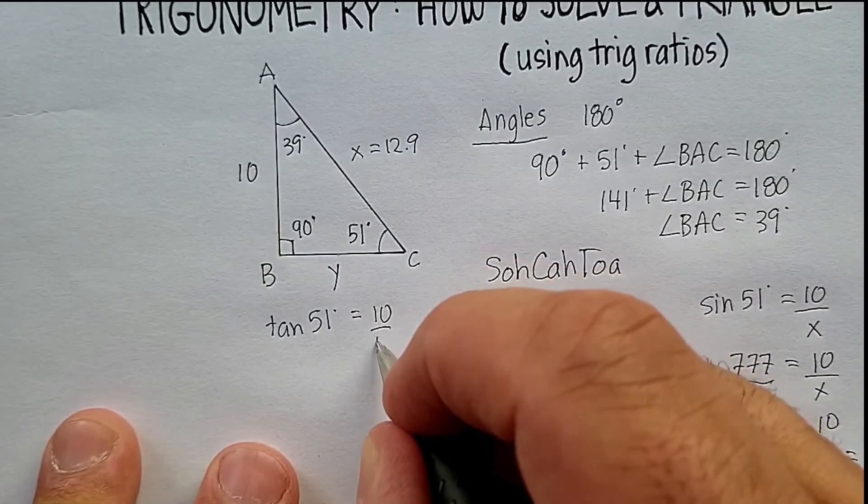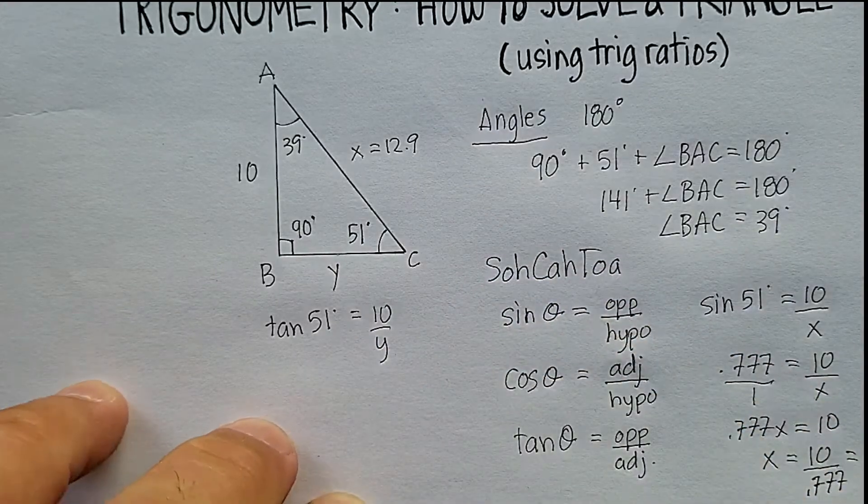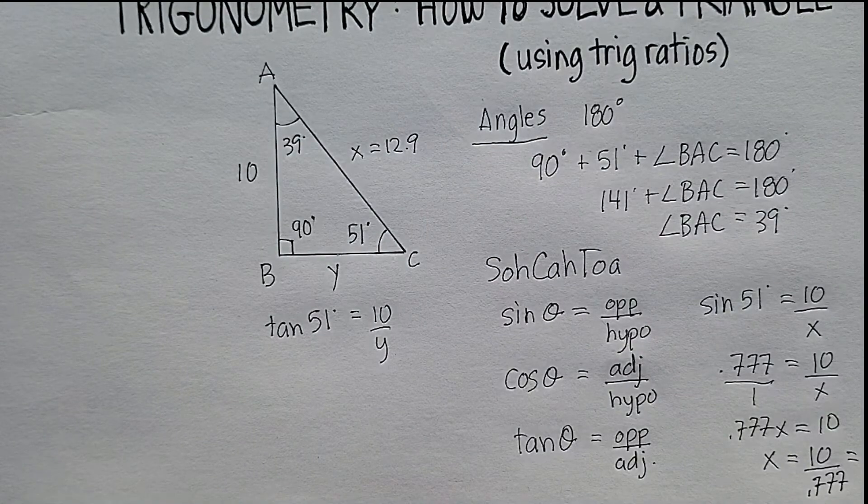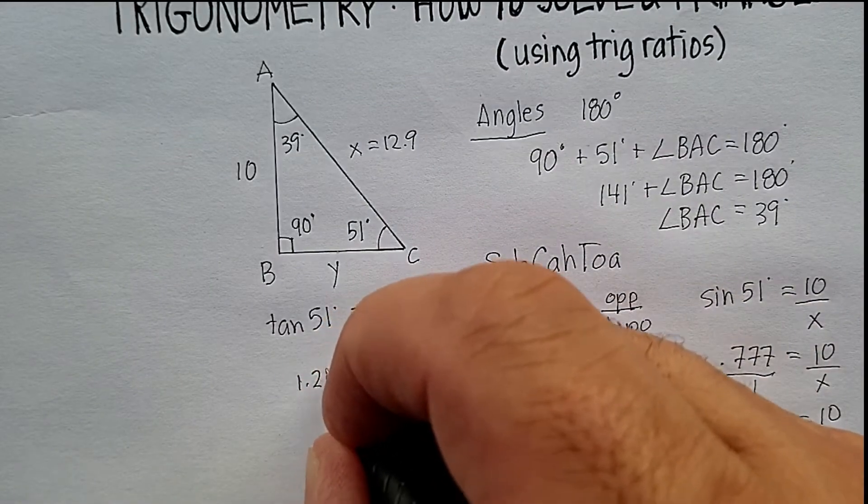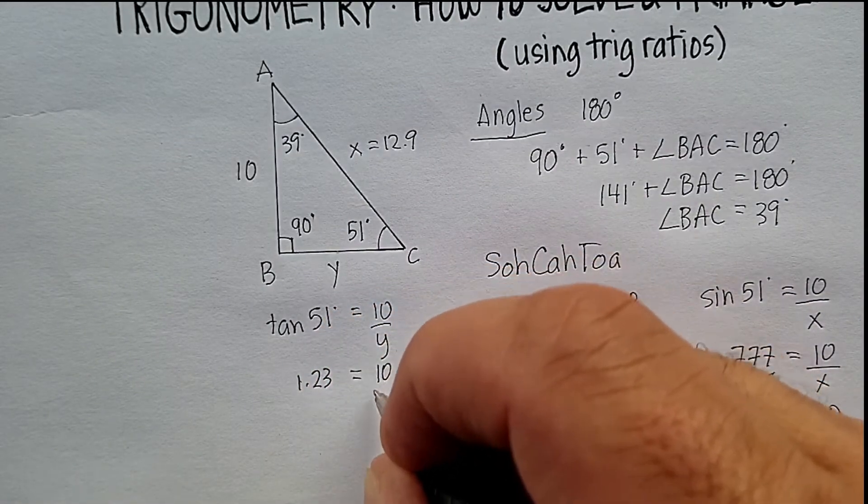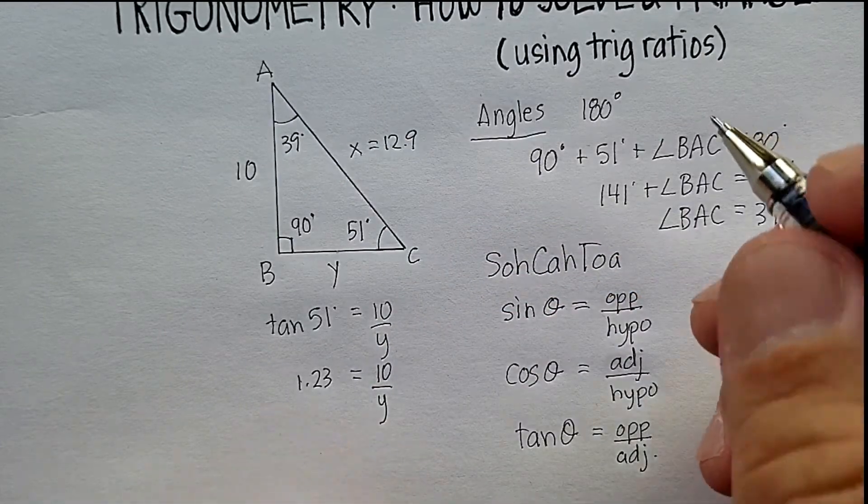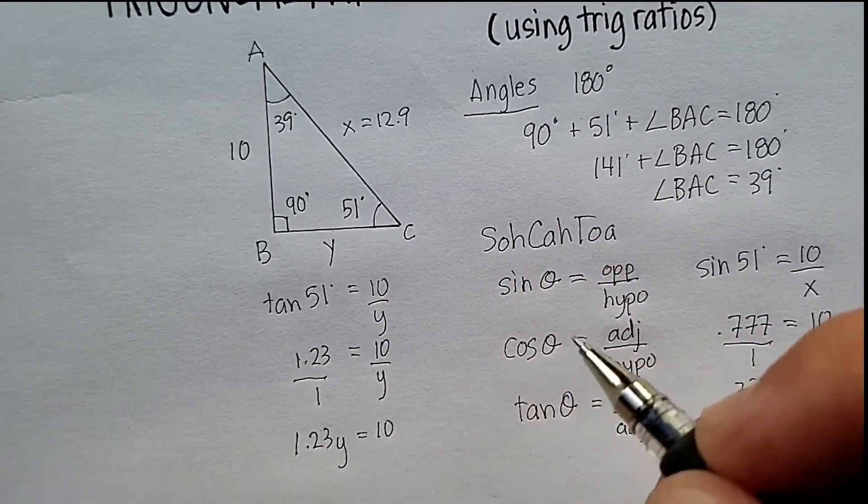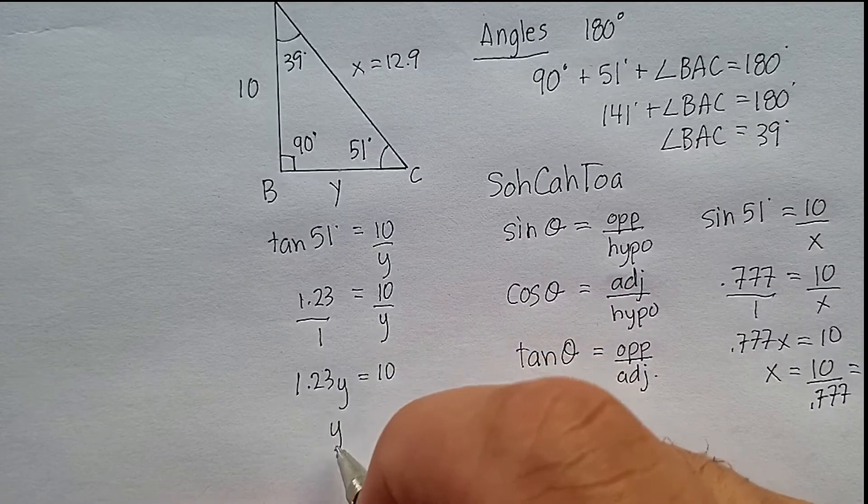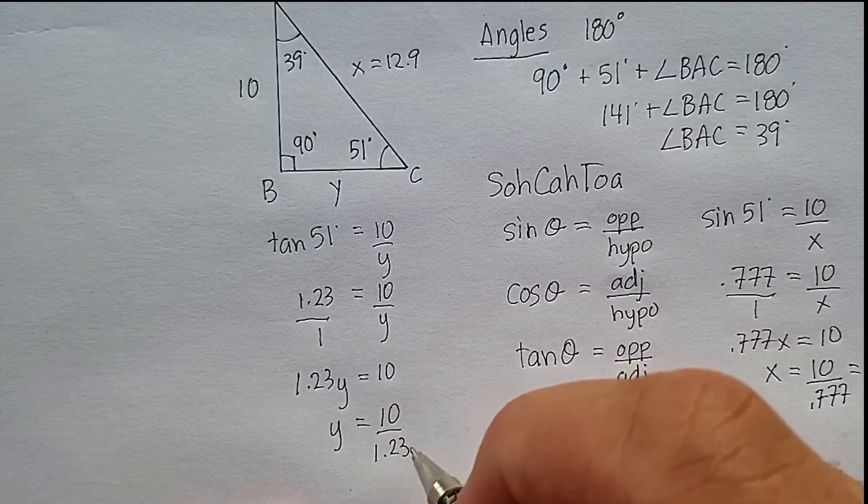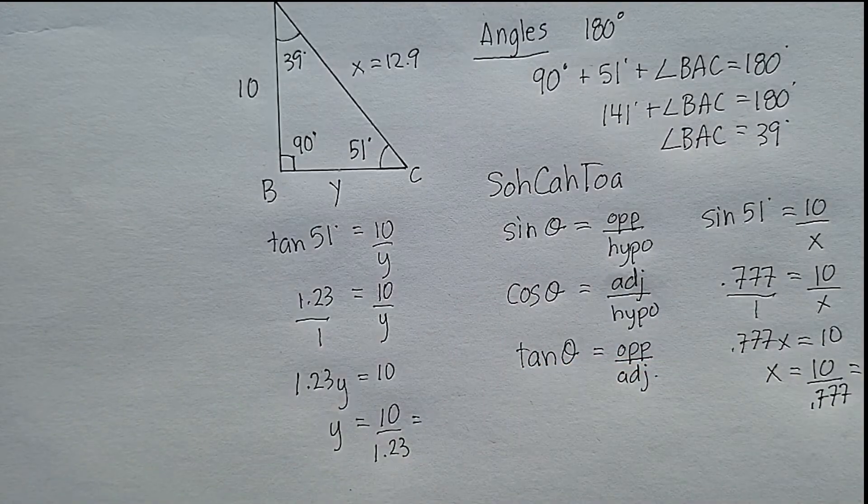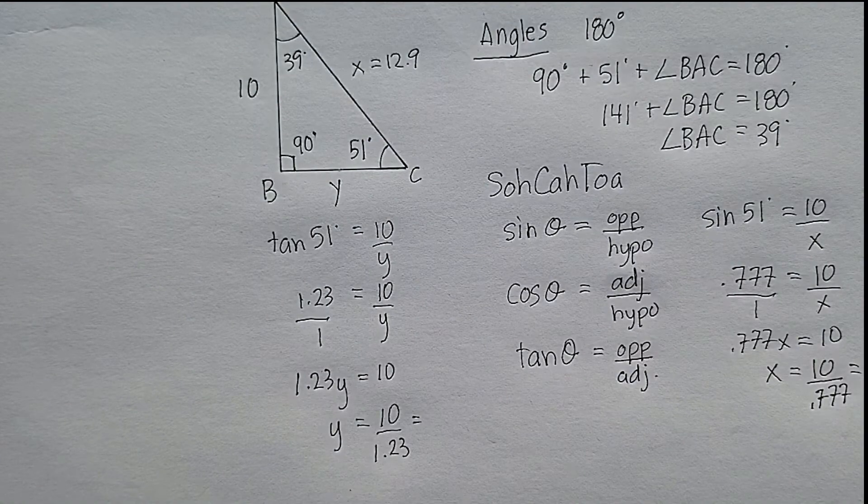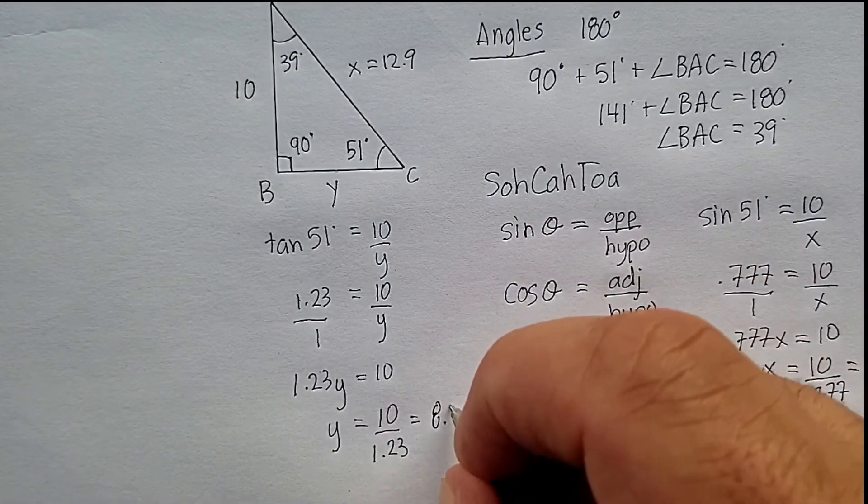We're going to say the tangent of 51 degrees is going to be equal to, remember the tangent is the opposite over the adjacent. So, we're going to say 10 over y. We're going to look up the tangent of 51. The tangent of 51 degrees is equal to 1.234. We're just going to keep it at 1.23. We're going to cross multiply again. And you get 1.23y is equal to 10. Let's divide by 1.23 on both sides. 10 divided by 1.23 is equal to 8.13.